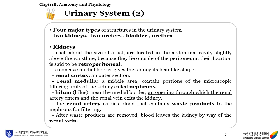There are four major types of structures in the urinary system: two kidneys, two ureters, one bladder, and one urethra. The kidneys are about the size of a fist, located in the abdominal cavity slightly above the waistline. Because they lie outside of the peritoneum, their location is said to be retroperitoneal. A concave medial border gives the kidney its bean-like shape.